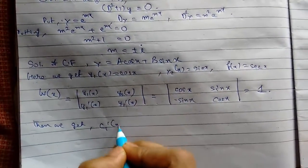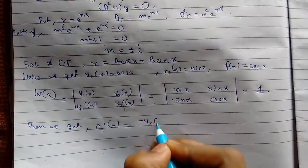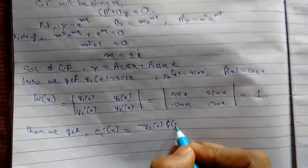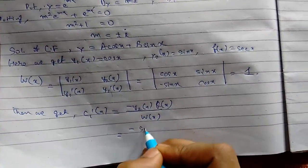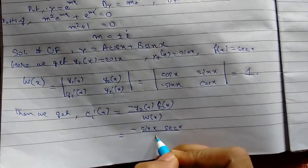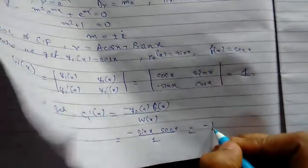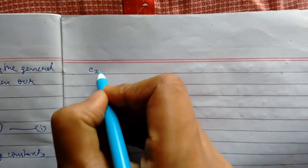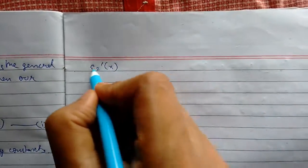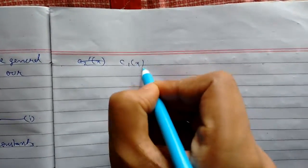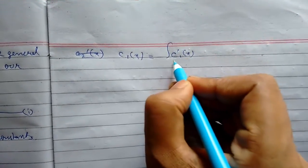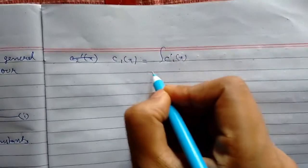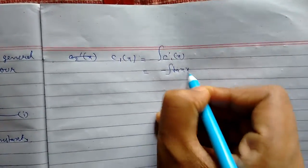Now we find C1'(x) = -Y2(x)·F(x) / W(x) = -sin(x)·sec(x) / 1 = -tan(x). So C1(x) = ∫(-tan(x)) dx = ln(cos(x)).